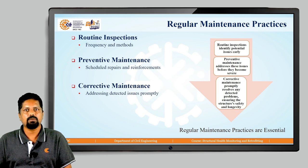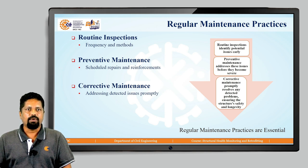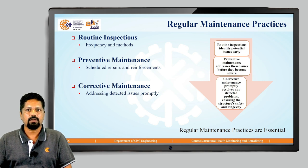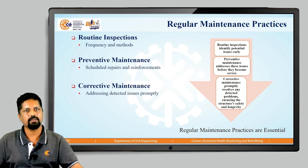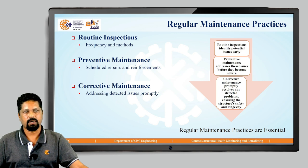Corrective maintenance promptly resolves any detected problems, ensuring the structure's safety and longevity. When a detected issue is addressed promptly, we plan for retrofitting or reconstruction. Regular maintenance practices are essential to maintain structural health. In this lesson, we discussed what structural health monitoring is, different ways to monitor structure health, different techniques of structural health monitoring, and regular maintenance practices. Thank you.